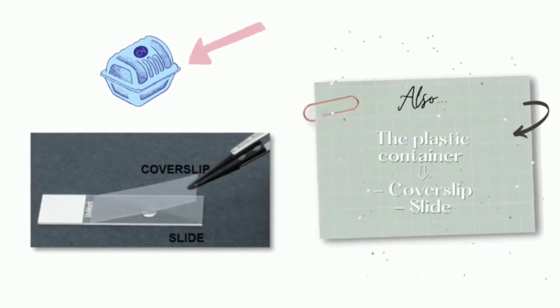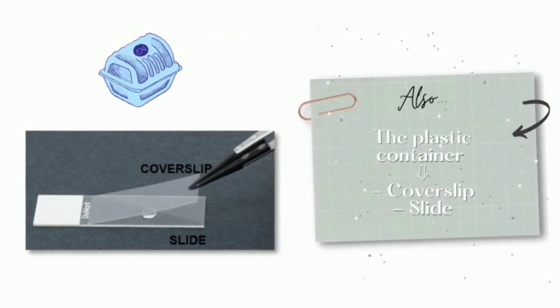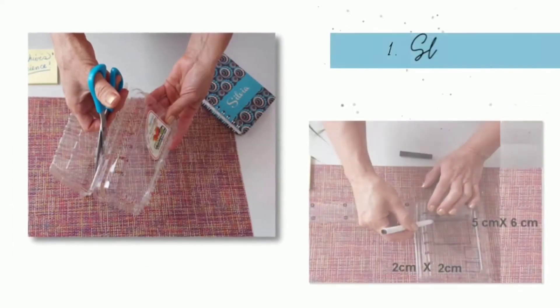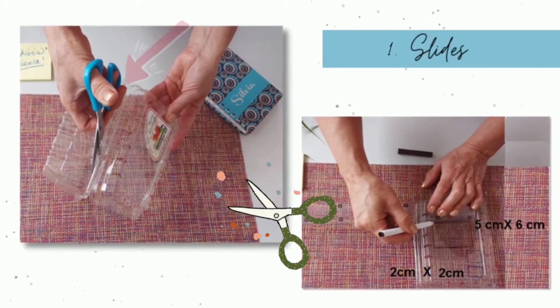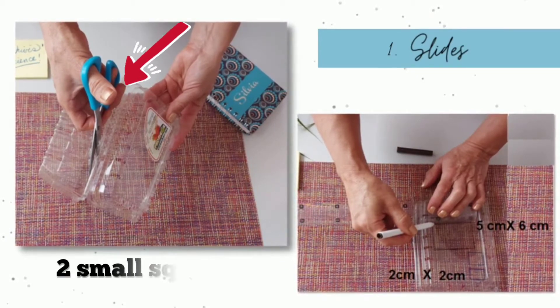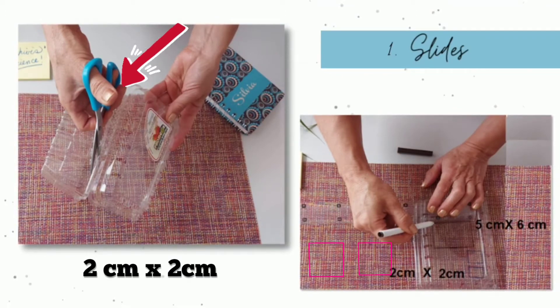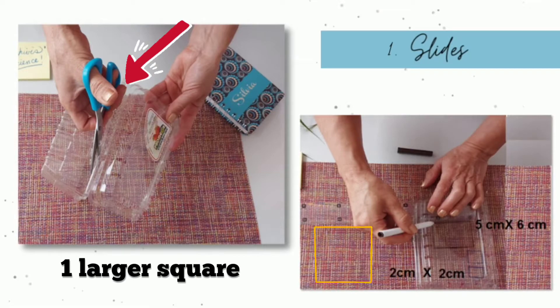Also, with the plastic container we will make the cover slip and the slide. So, we are going to take some scissors and carefully we will cut two small squares of two centimeters by side and we are going to cut a larger one of five centimeters by six centimeters.